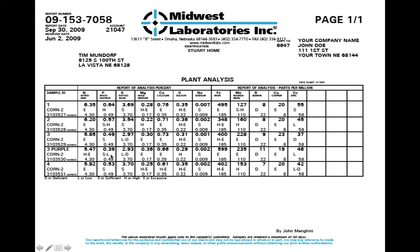For phosphorus, the only area rating below sufficient is the purple-corn area (3P). The soil test showed low phosphorus there, and the plant tissue confirms it: sufficient-to-low rating. This aligns — low soil test phosphorus, low plant tissue phosphorus, visual purpling. Potassium also shows Area 3 lower than others, consistent with the soil test. This is the tissue test helping fine-tune what we see in the soil: the areas with lower soil potassium show lower potassium in the plant tissue as well.